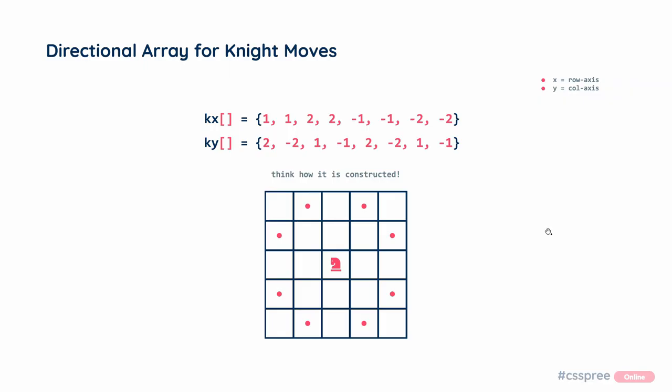We would like to talk about the neighbor cell calculation — how to calculate dx and dy change, build the directional array, implement the DFS and BFS, and do graph traversal. We recommend solving problems, especially using the directional array. Thank you.